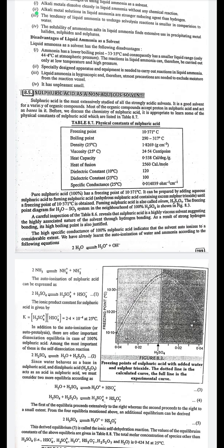The auto-ionization of water and ammonia: 2H₂O → H₃O⁺ + OH⁻; 2NH₃ → NH₄⁺ + NH₂⁻. The auto-ionization of sulfuric acid: 2H₂SO₄ → H₃SO₄⁺ + HSO₄⁻. The ionic product constant for sulfuric acid: K = [H₃SO₄⁺][HSO₄⁻] = 2.4 × 10⁻⁴ at 25°C.